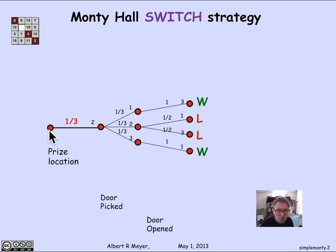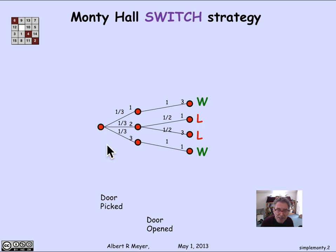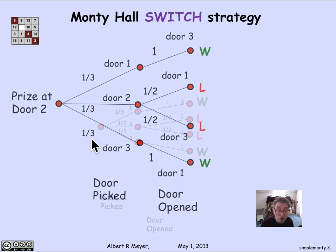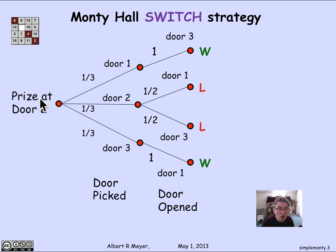Now, when we're looking at this tree, the first branch is kind of fixed and forced, so we don't really need it as part of the analysis. What we're really looking at is analyzing what happens in the experiment starting at the stage where the contestant picks a door. So let's enlarge this tree to get a better look at it. There's the same tree where we're assuming the prize is at door two, and then the door picked can be either door one, door two, or door three. And the door opened can then be door three, door one, door three, or door one, according to the constraints on Carol.